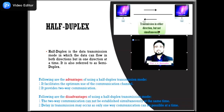An example of half-duplex communication is a walkie-talkie. One party speaks while the other party listens. After a pause, the other speaks and the first party listens. Speaking simultaneously would create distortion in sound which cannot be understood.